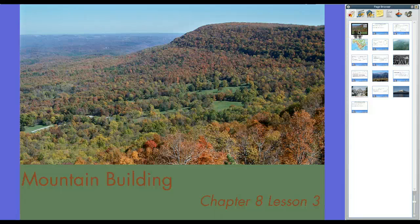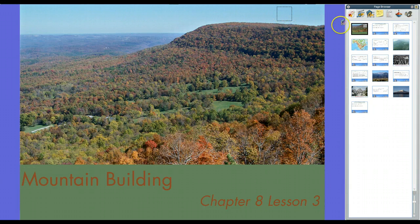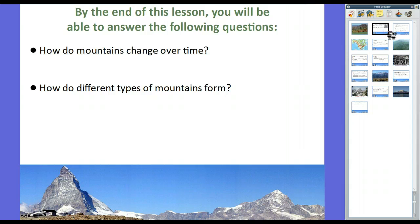Hey guys, Mr. Klein here. We're talking about mountain building, Chapter 8, Lesson 3, an extension of the previous lesson on landforms at plate boundaries. We're going to focus on what happens when two continental plates collide — they form mountains. In this lesson, you will be able to answer the following questions: how do mountains change over time, and how do different types of mountains form?